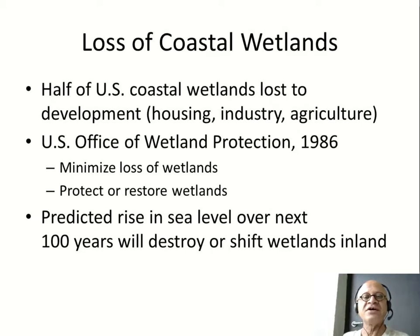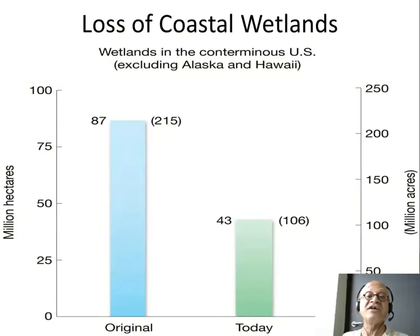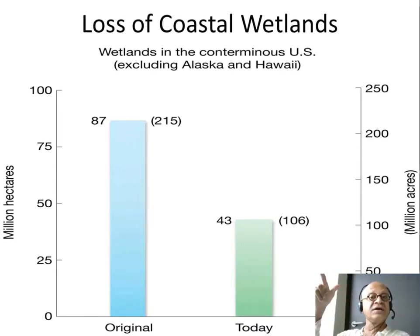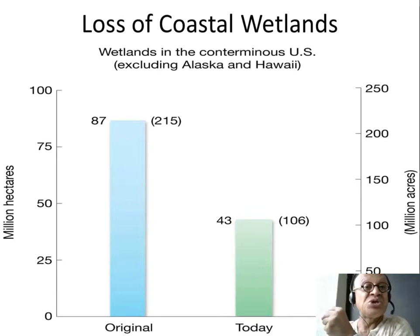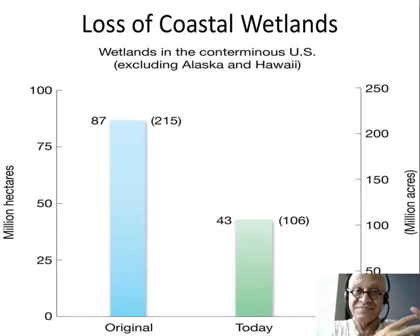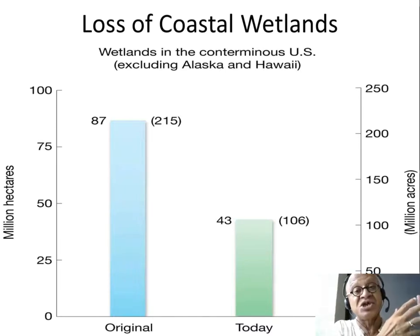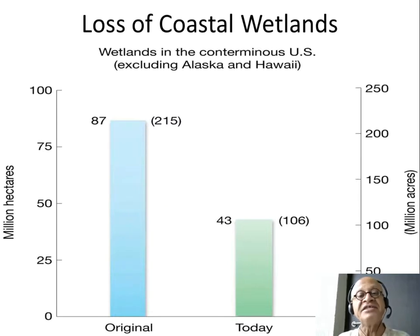Sea level has already risen about a meter on average since the Industrial Revolution, and sea level rise is now accelerating. The sea level between North Carolina and Massachusetts is rising at three to four times the global rate — similar to the Northern Bay of Bengal — due to ocean dynamics and because as the Greenland Glacier melts, its gravitational pull reduces and water sloshes toward the US coast. Originally, US wetlands covered about 87 million hectares; now they are less than 43 million hectares — less than half.